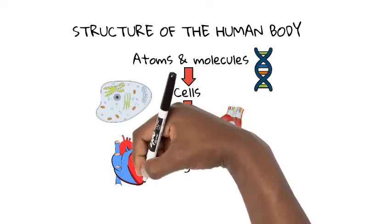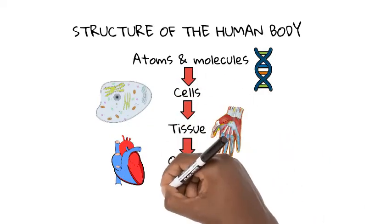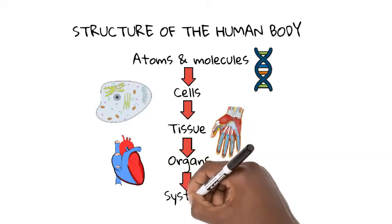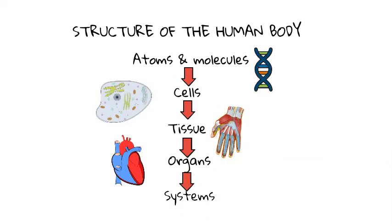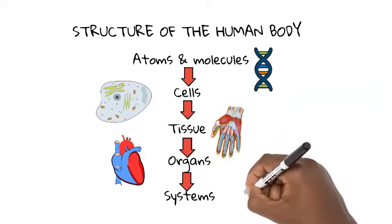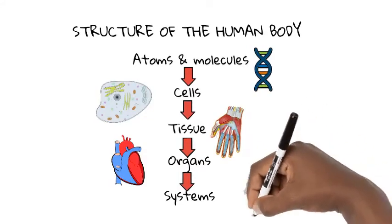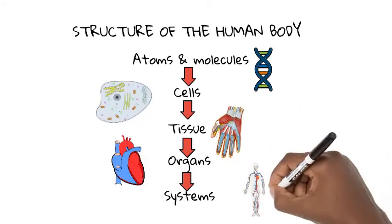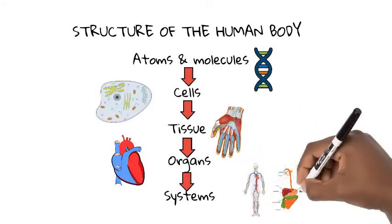Lastly, there are systems, and this is where organs come together to form these systems, which are, for example, the nervous system, respiratory system, circulatory system, digestive system, reproductive system, muscular system, the immune system, and the skeletal system.